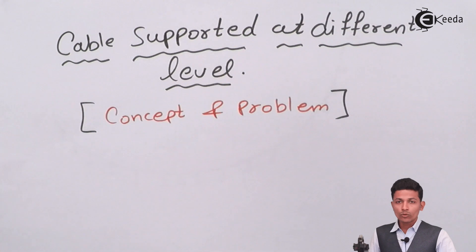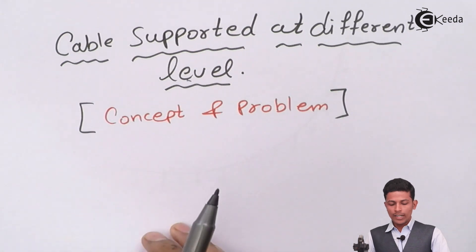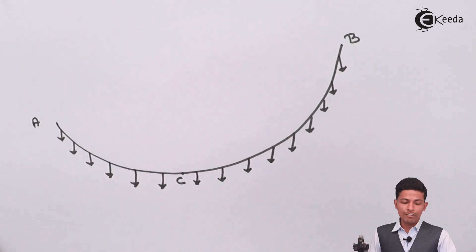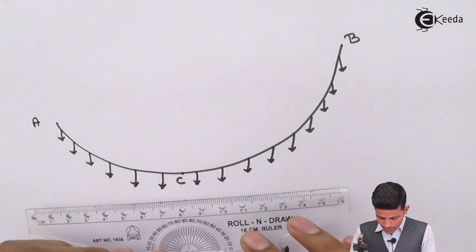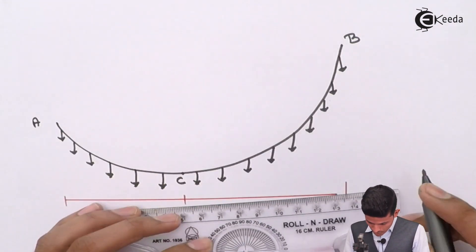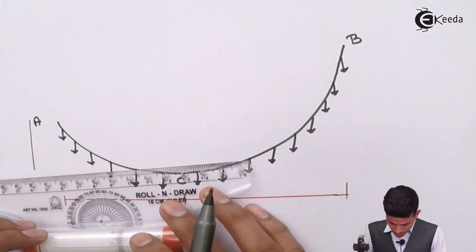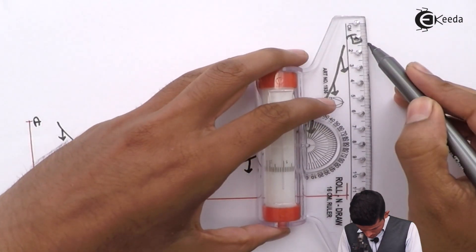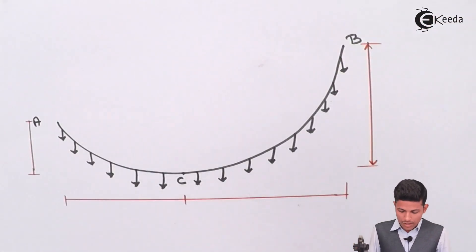This is the concept of cable supported at different levels — concepts and problems. Let's see what the concepts are. This is a cable supported at a different level, and this distance is C.